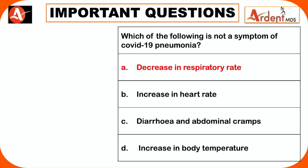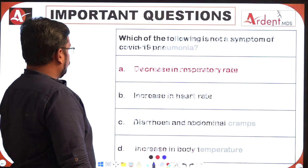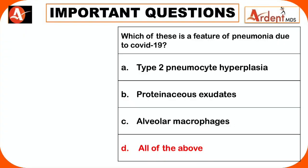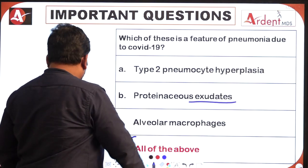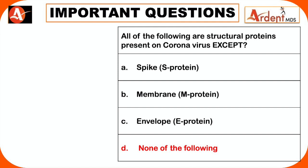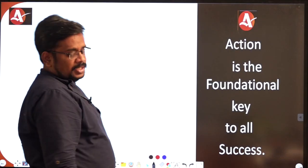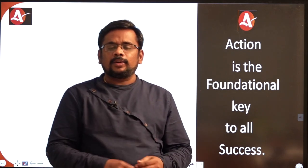Features of pneumonia due to COVID-19 include hyperplasia of Type 2 pneumocytes, proteinaceous exudate, and alveolar macrophages — answer is all of the above. Regarding structural proteins present in coronavirus — Spike protein, Membrane protein, and Envelope protein are all present — so the answer is 'none of the above' for a question asking which is not present. These are the key variant points you need to know related to COVID-19. Hope it was very useful — thank you.